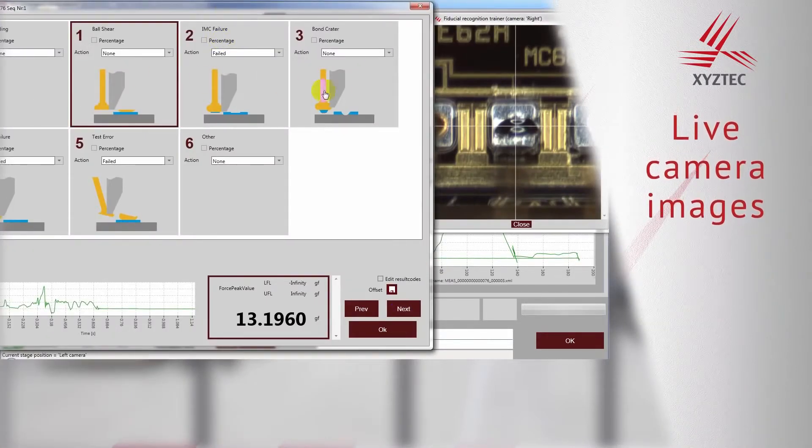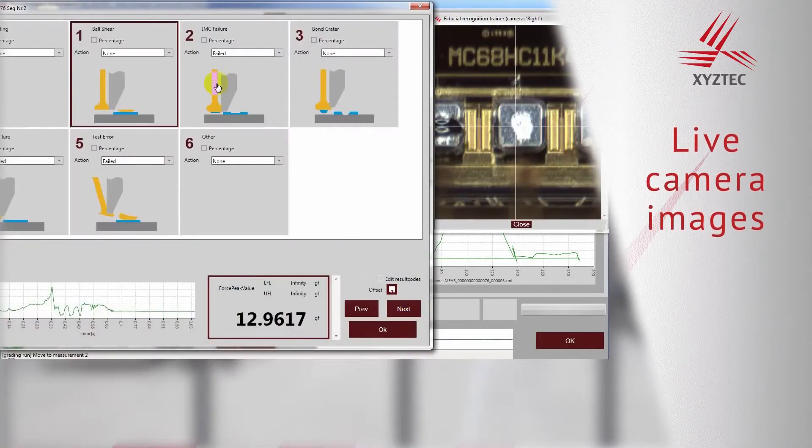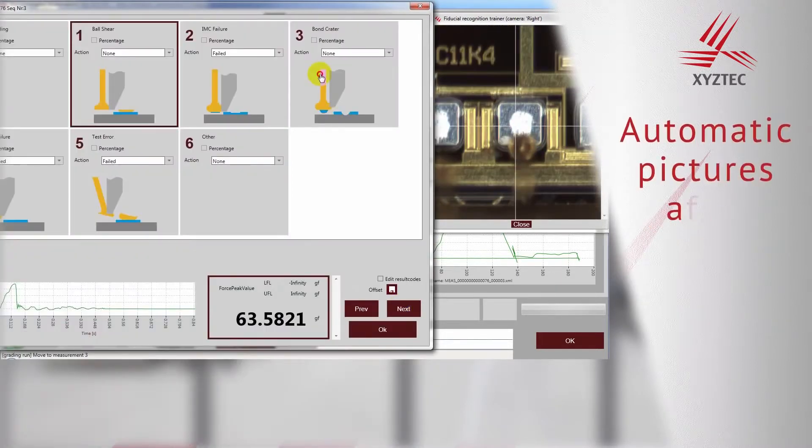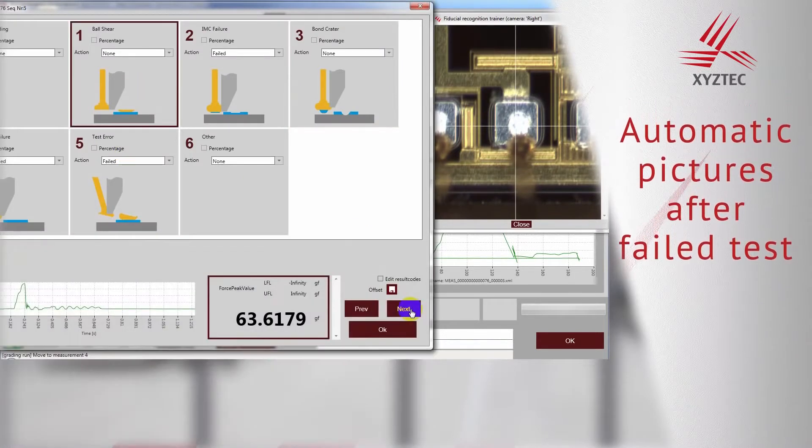A live camera image helps the operator determine the grading. The system can also automatically capture a picture of failed tests.